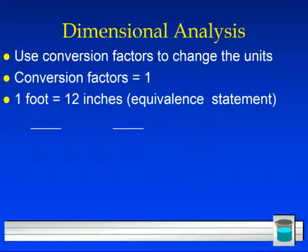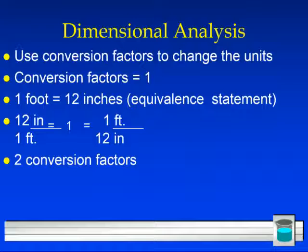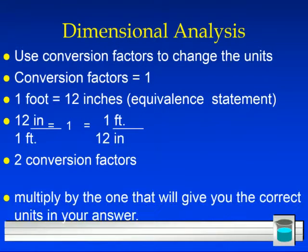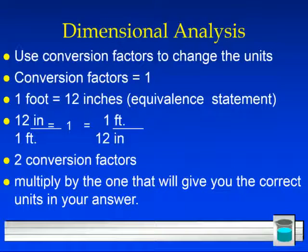For example, 1 foot is equal to 12 inches. It's an equivalent statement. They're the exact same thing. So I'm going to create this fraction. 12 inches divided by 1 foot equals 1. Similarly, 1 foot divided by 12 inches also equals 1. This actually gives me two different conversion factors. And I'm going to preferentially use the conversion factor that gives me the correct units in my answer.